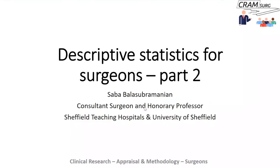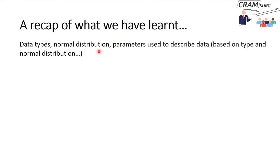This is Descriptive Statistics Part 2. If you haven't heard the Part 1 talk, it's there on YouTube, so have a look at it. A quick recap of what we learned in Part 1: we talked about data types, normal distribution, and the parameters used to describe data based on the data type and the normal distribution.